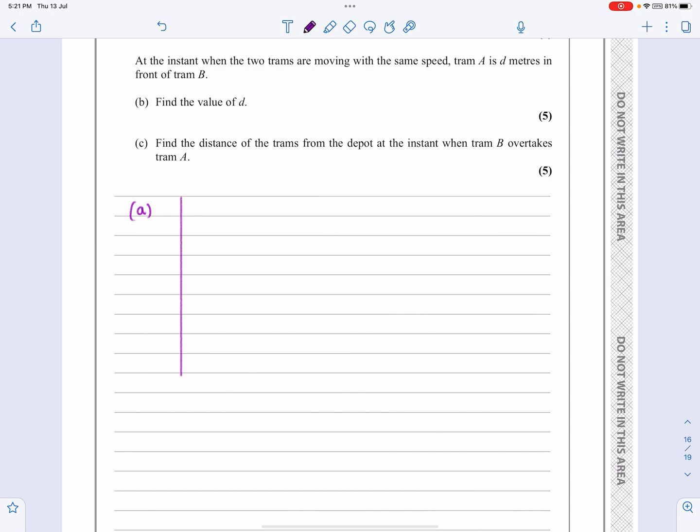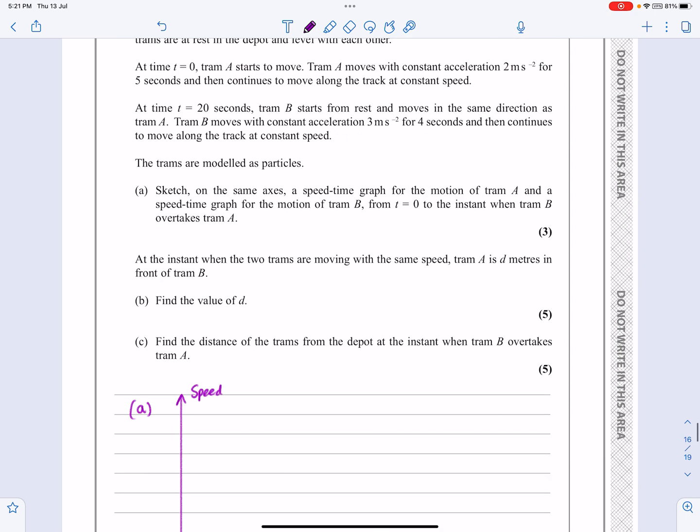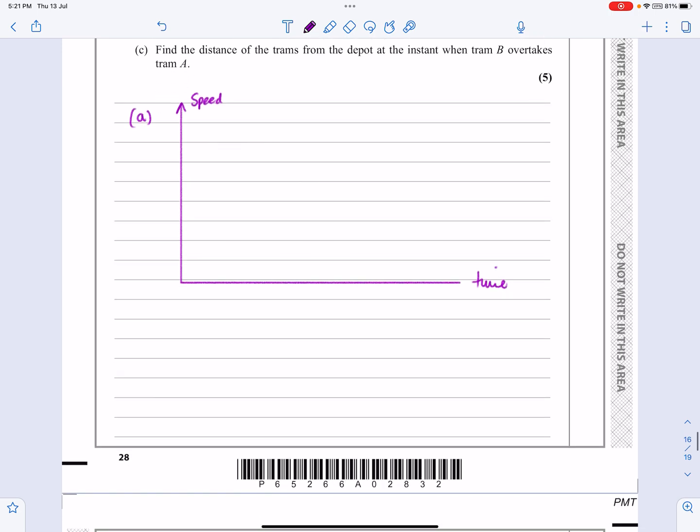Right, so let's do our axes for our speed-time graph. We've got speed here, time here. Let's concentrate on A first of all. So A starts off at T equals 0 and accelerates at 2 meters per second squared for five seconds. So it's going to accelerate up, take five seconds to reach a speed and then it just travels with that constant speed for the rest of the journey. So that's A.